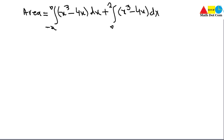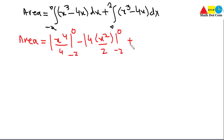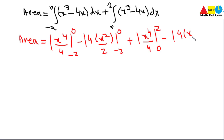Integrating x³ - 4x: the integral of x³ is x⁴/4 and the integral of 4x is 4·(x²/2) = 2x². Applying limits -2 to 0 for the first part and 0 to 2 for the second part: Area = [x⁴/4 - 2x²] from -2 to 0 + [x⁴/4 - 2x²] from 0 to 2.